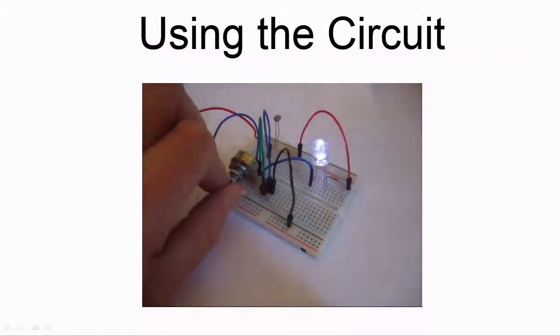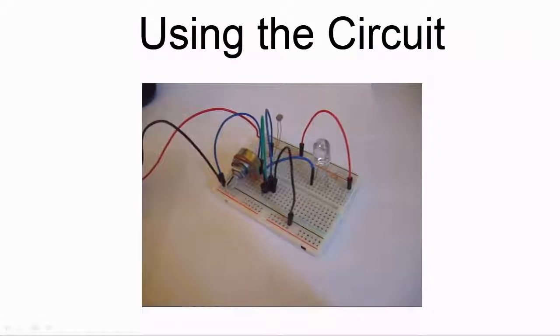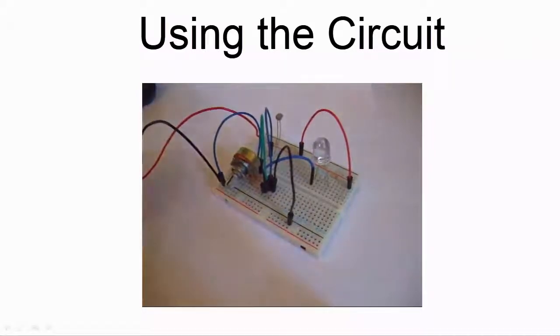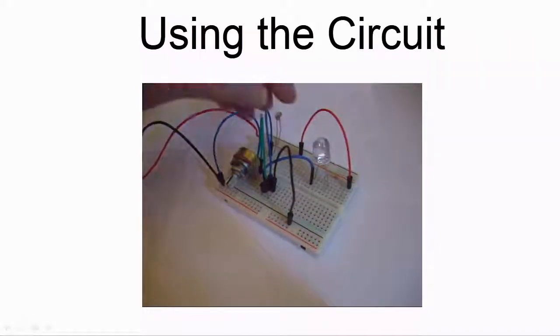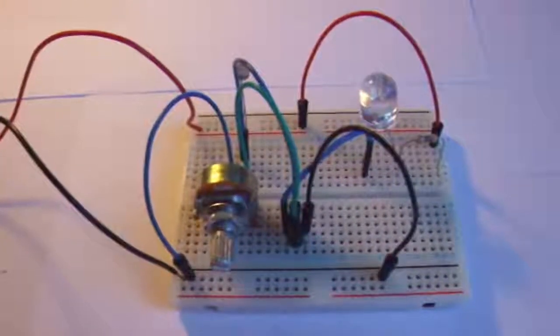Try rotating the knob on the variable resistor in both directions, while covering or partially covering the LDR. By doing this, you should be able to set the circuit up to calibrate it, so that the LED comes on when you want it to.